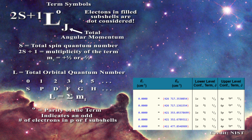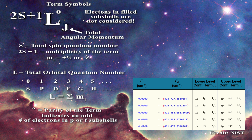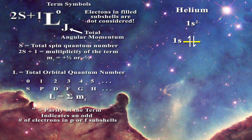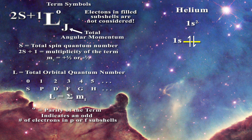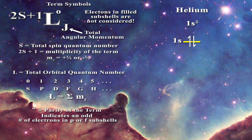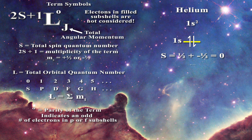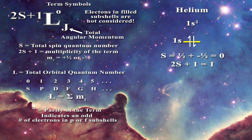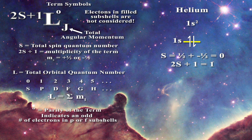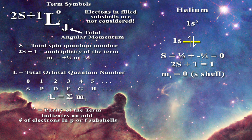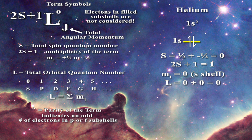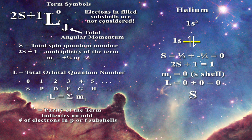To help everyone better understand term symbols, let us go through a few examples. We begin with helium, which has a 1s2 electronic configuration. First we must determine the multiplicity. There are two electrons in the s shell which are paired, therefore the total spin quantum number is equal to one half plus minus one half, which is zero. The multiplicity is therefore one — two times zero plus one — so we are dealing with a singlet. Since both electrons are in an s shell with magnetic quantum number zero, the total orbital quantum number is zero plus zero, equal to zero, which is represented by the letter S.